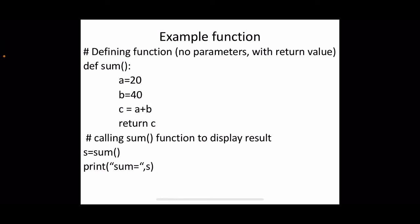The third variant has no parameters but with a return value. The values are assigned inside the function — a = 20, b = 40 — and the sum is assigned to c. Instead of printing inside the function, we return the value back to the caller. In the main thread, the return value of 'sum()' is assigned to variable s, and then s is printed in the main thread.